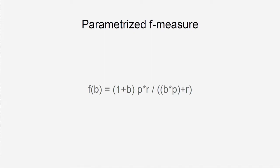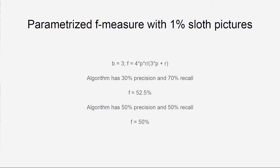Can we improve F-measure? We can parameterize it. By choosing a parameter, we can give one metric more weight than the other. If we choose parameter three, we give recall more weight. With 30% precision and 70% recall, we get 52% F-measure, which is higher than the arithmetic average. Going back to our temple example: we want much more recall than precision, so we choose a parameter that weights recall more — and we have our metric.